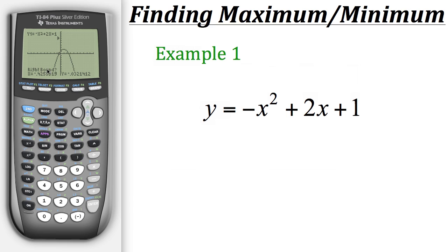But before it does that we need to also set the right bound which is what it's currently asking in the bottom left corner. So to do that we'll do the same thing. We'll first go to our general area where the maximum is but this time go to the right of it a little ways, and then hit enter.